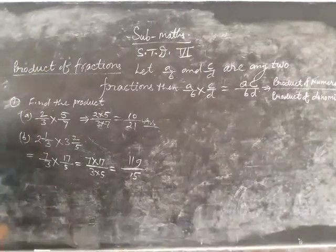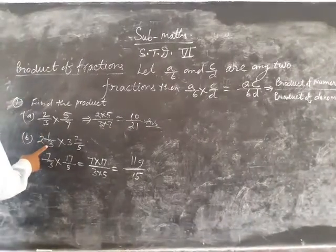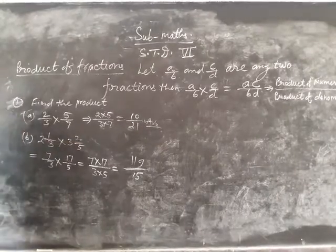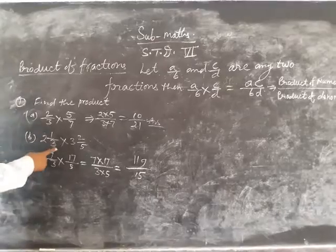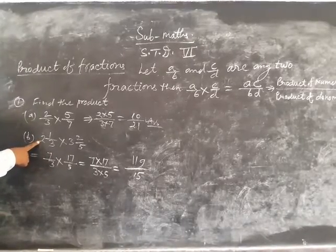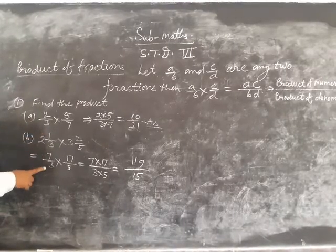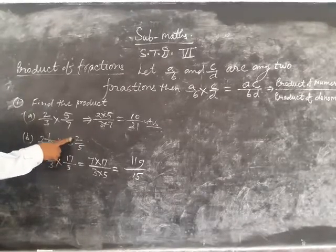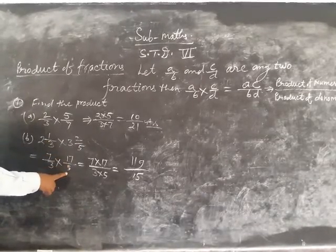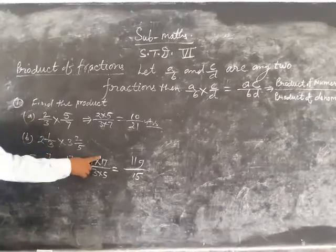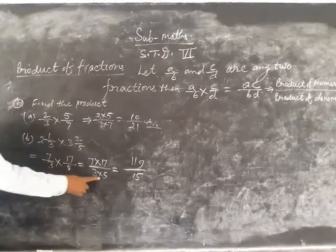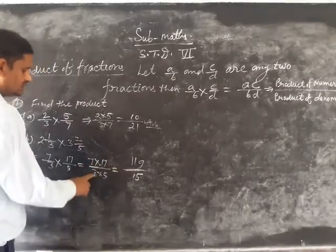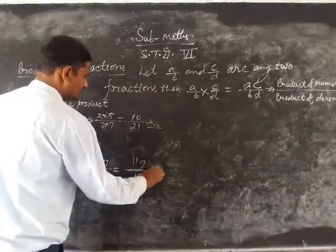B part: 2 whole number 1 upon 3 into 3 whole number 2 upon 5. Convert into improper fractions. 3 times 2 plus 1 equals 7 upon 3 into 5 times 3 is 15 plus 2 equals 17 upon 5. So, 7 into 17 upon 3 into 5. 7 into 17 is 119, 3 into 5 is 15. Answer.